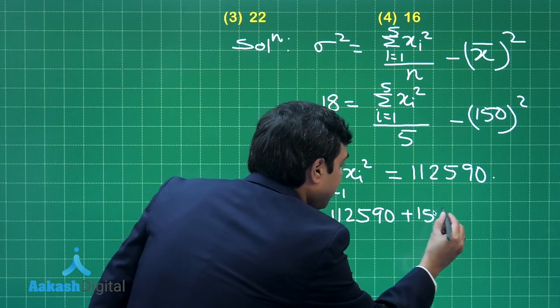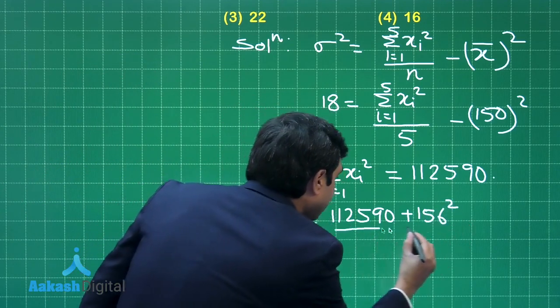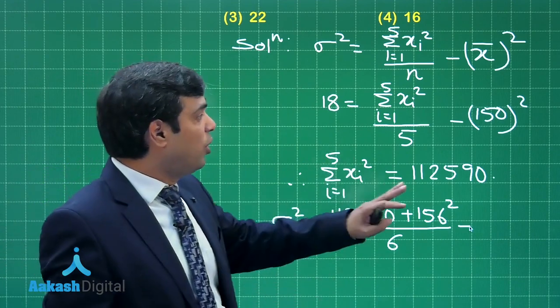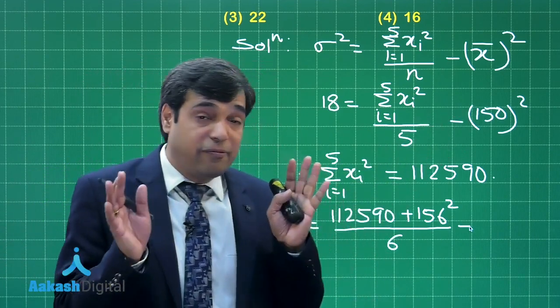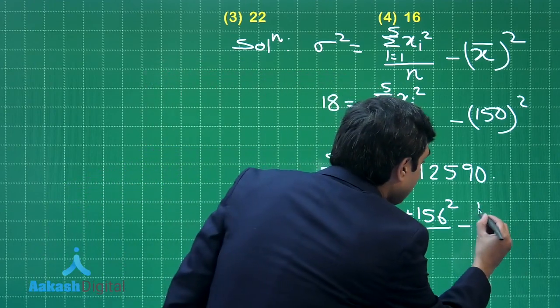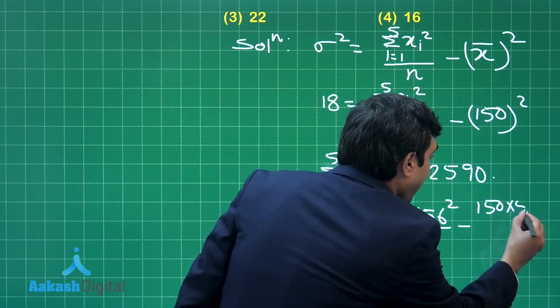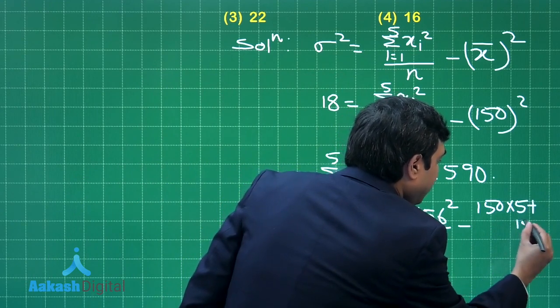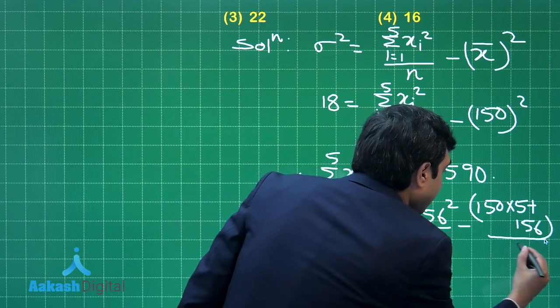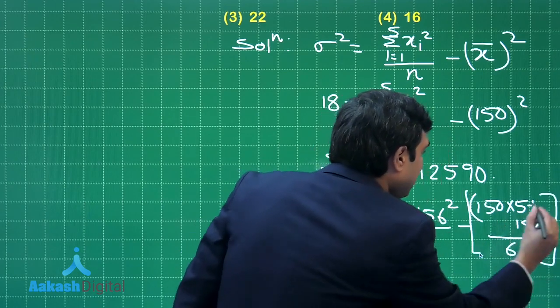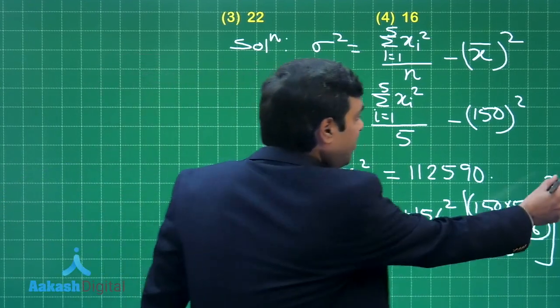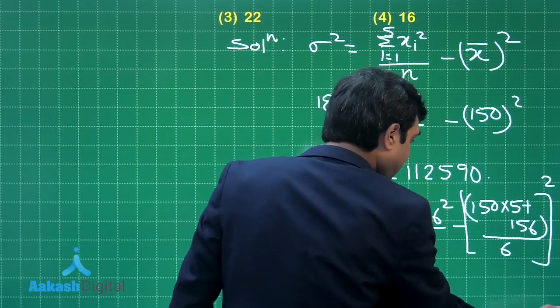So we have 112,590 + 156² divided by 6, minus the new mean. What is the old mean? 150 for 5 students. Another student of height 156 joined, so the new mean is (150 × 5 + 156)/6. Just square this up.